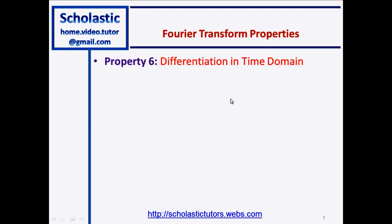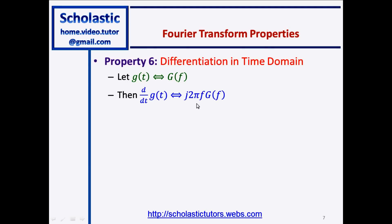Property number six: differentiation in the time domain. Again, we have g(t) in the time domain and G(f) in the frequency domain. Then if you differentiate g(t) in the time domain with respect to t, you get a function in the frequency domain equal to j2πf times G(f). So differentiation in the time domain becomes multiplication by j2πf in the frequency domain.